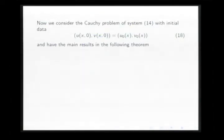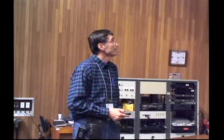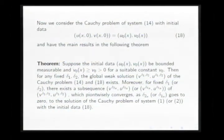Now, we consider the Cauchy problem for system 14 with initial data U0, V0. And this is the main result of our work. Suppose initial data U0, V0, and V0 bigger than V0. V0 is a positive constant. For a suitable constant V0, then for any fixed Delta 1, Delta 2, the global weak solution of the Cauchy problem exists. Moreover, for fixed Delta 1 or Delta 2, there exists a subsequence of V Delta 1 Delta 2, or V mu Delta 2, which pointwise converges as Delta 2 goes to zero to the solution of the Cauchy problem for system 1 or 2, with initial data 18.